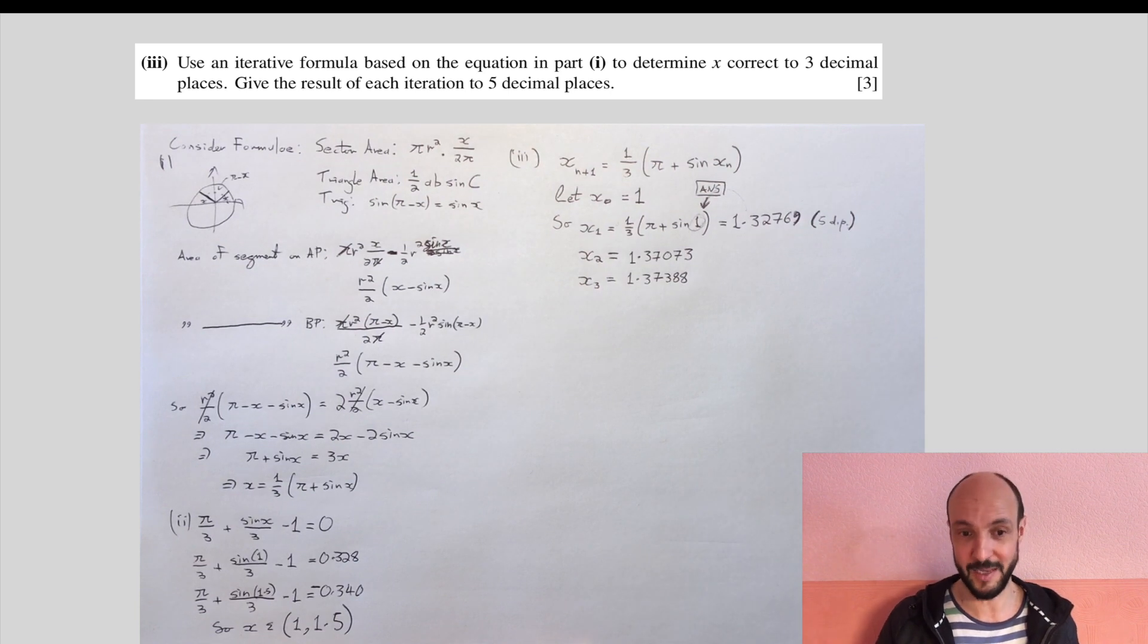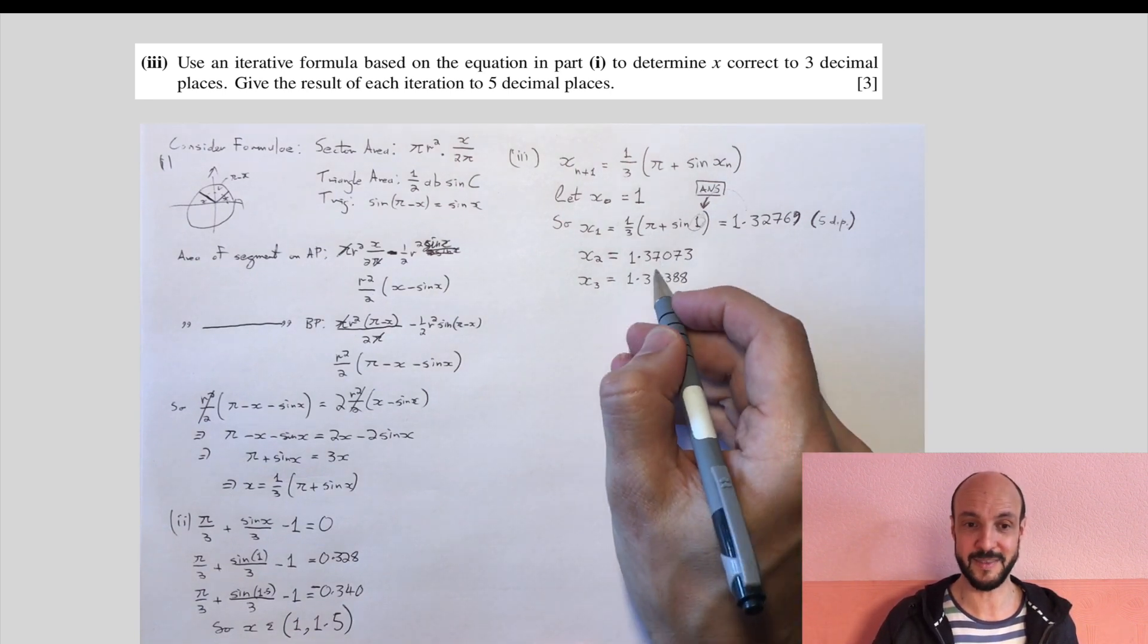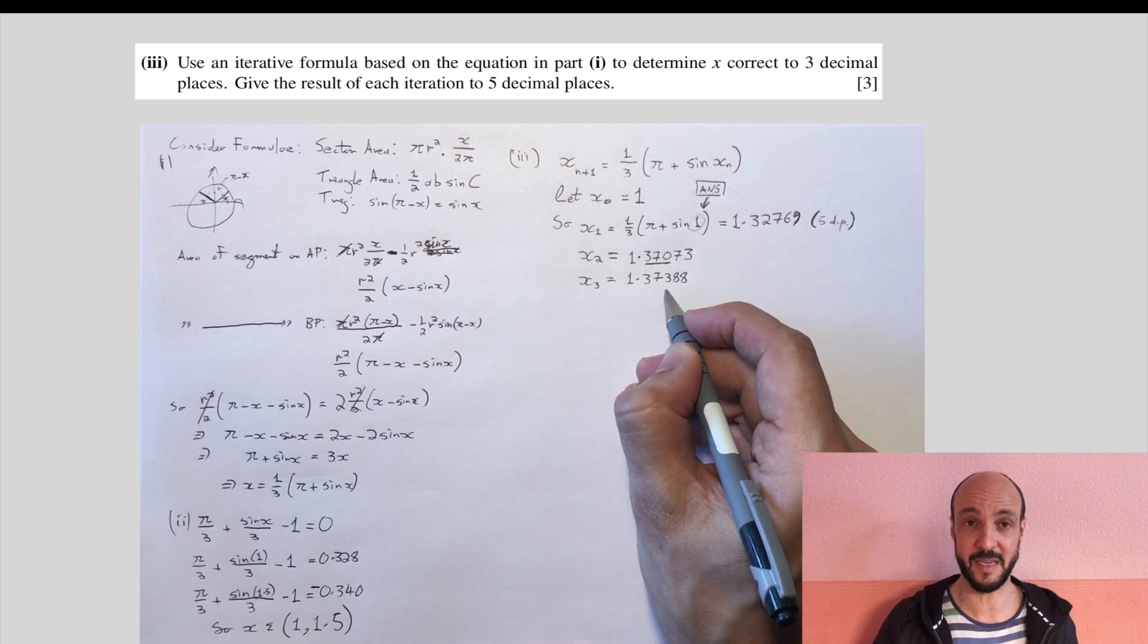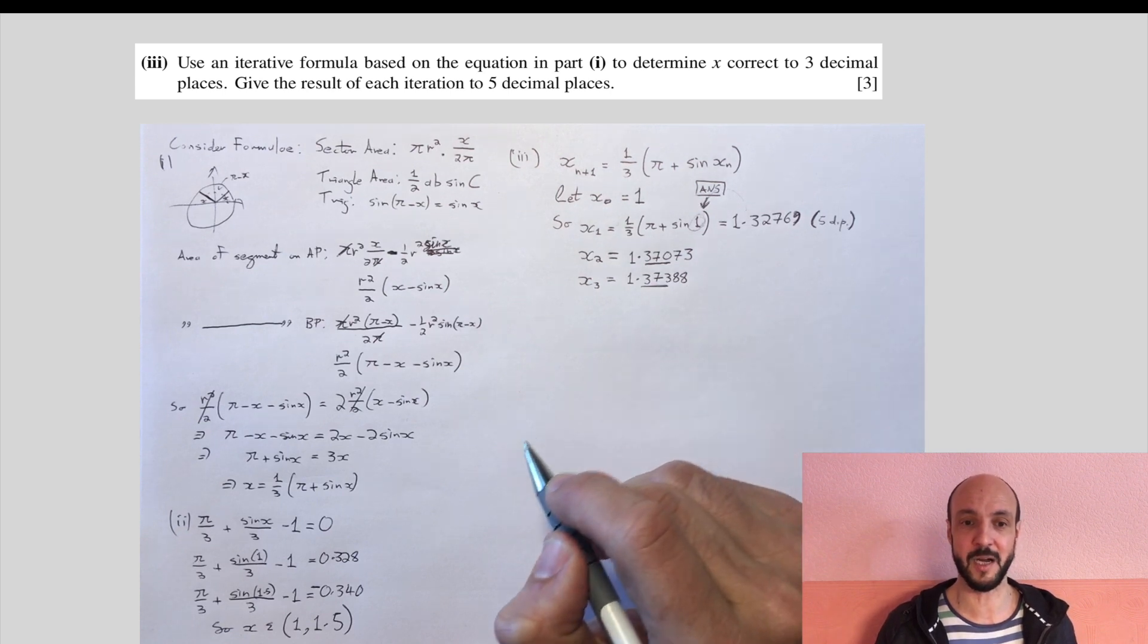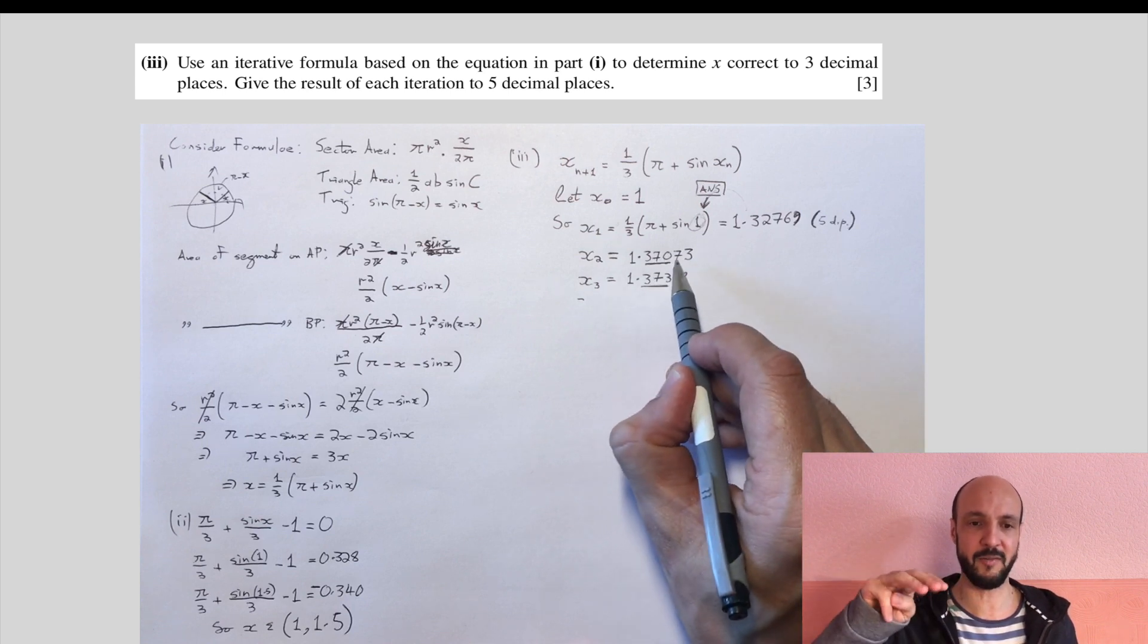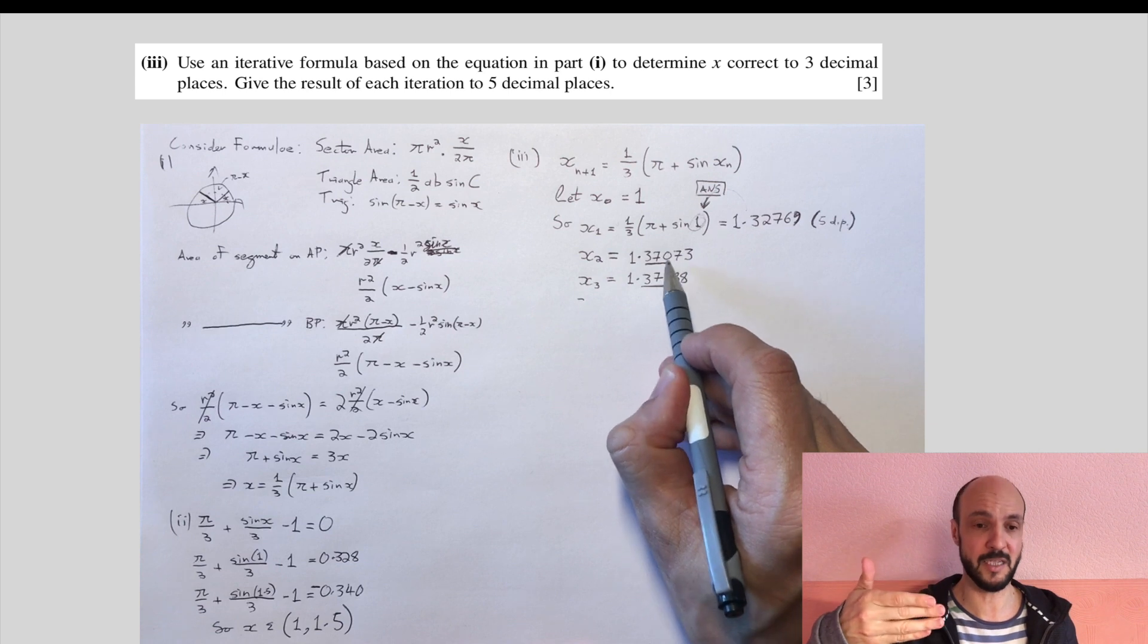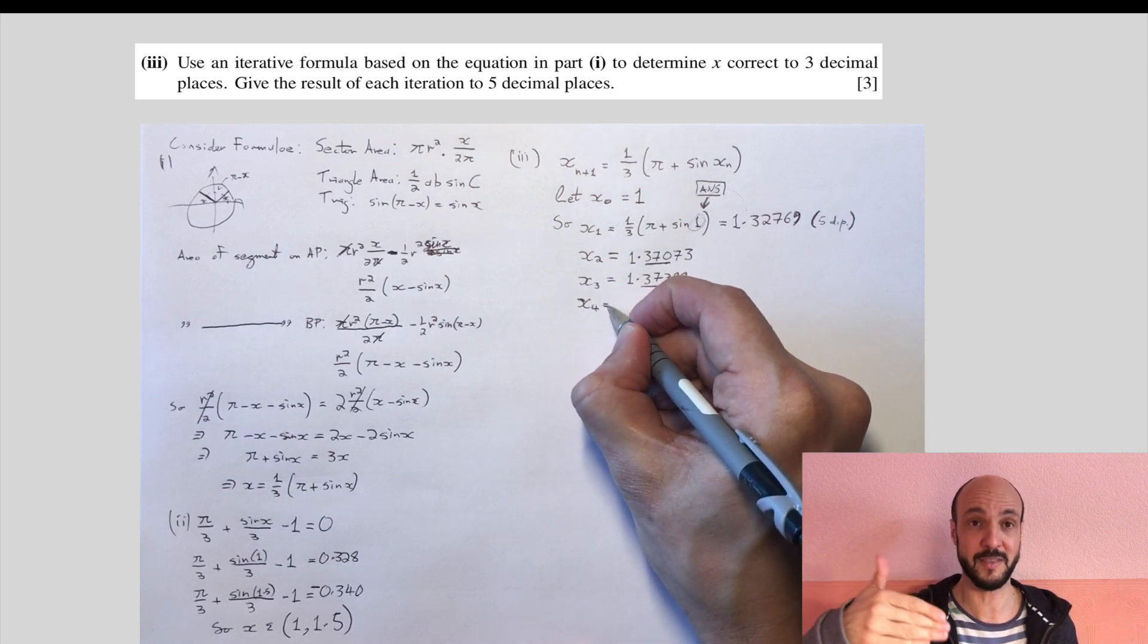So you press the equals button, you get your next answer is 1.37073. Press the equals button again, you get 1.37388. Notice in the question it asked that each step would be given to five decimal places, so it's important you do that if you don't want to lose marks. Now it's asked for the final answer to be correct to three decimal places. If we've got 1.3707 and 1.3738, we don't know it to three decimal places yet.